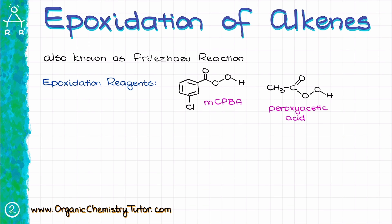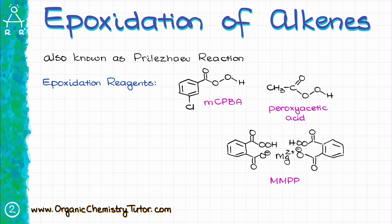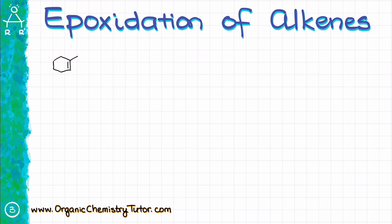For instance, you might also encounter peroxyacetic acid or another reagent that we abbreviate as MMPP. For our purposes, those peroxy acids are completely interchangeable. So, for instance, if I take 1-methylcyclohexene and then treat that with MCPBA, I am going to end up with the corresponding epoxide plus the enantiomer in this particular case.